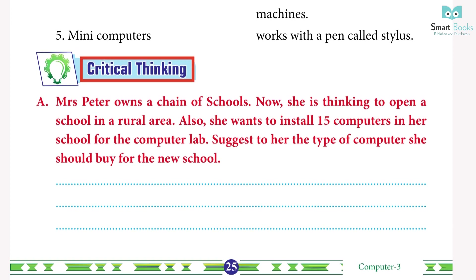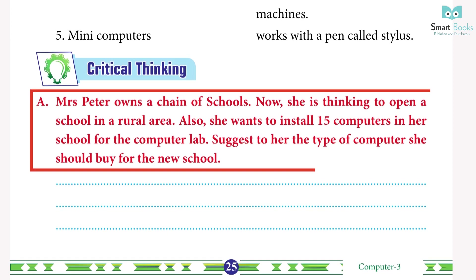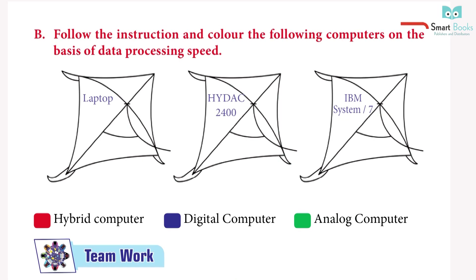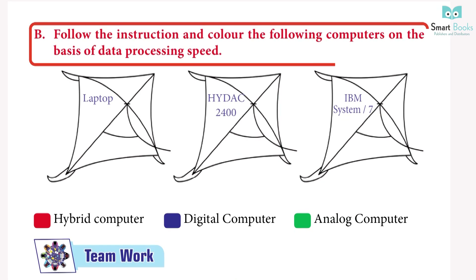Critical thinking: Mrs. Peter owns a chain of schools and is thinking of opening a school in a rural area. She wants to install 15 computers in her school for the computer lab. Suggest the type of computer she should buy. Answer: desktop computer.